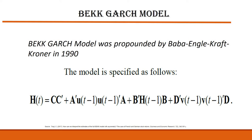The model is specified as: H_T = C'C + A' U_{T-1} U_{T-1}' A + B' H_{T-1} B + D' V_{T-1} V_{T-1}' D, where the dash denotes a transpose. Now let's see what this equation means.